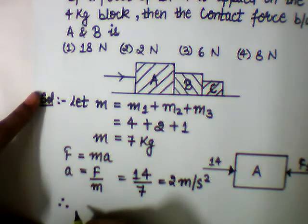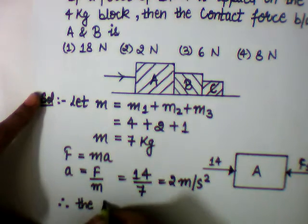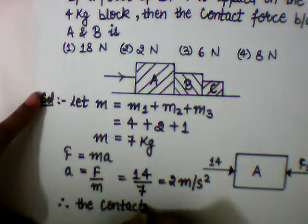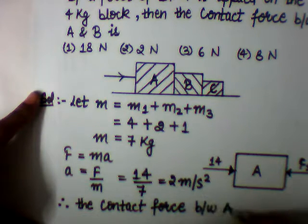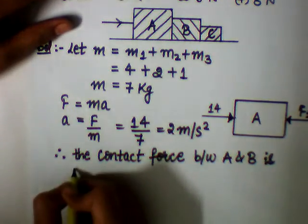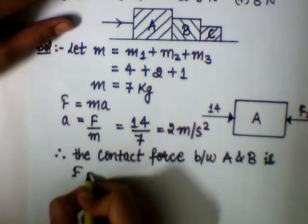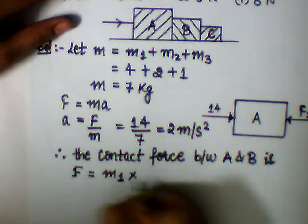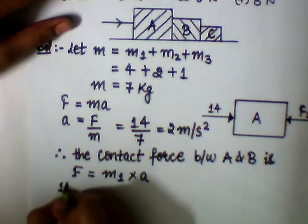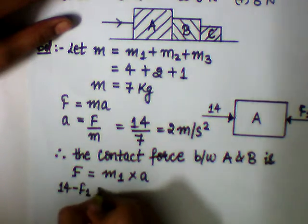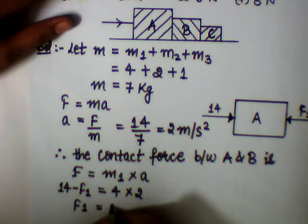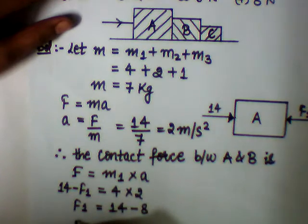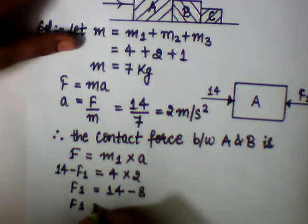We have to find the contact force between A and B. The contact force: F equals to M1 into A. Putting the values, 14 minus F1 equals to 4 into 2. Solving it, we get F1 equals to 14 minus 8, so F1 equals to 6 N.